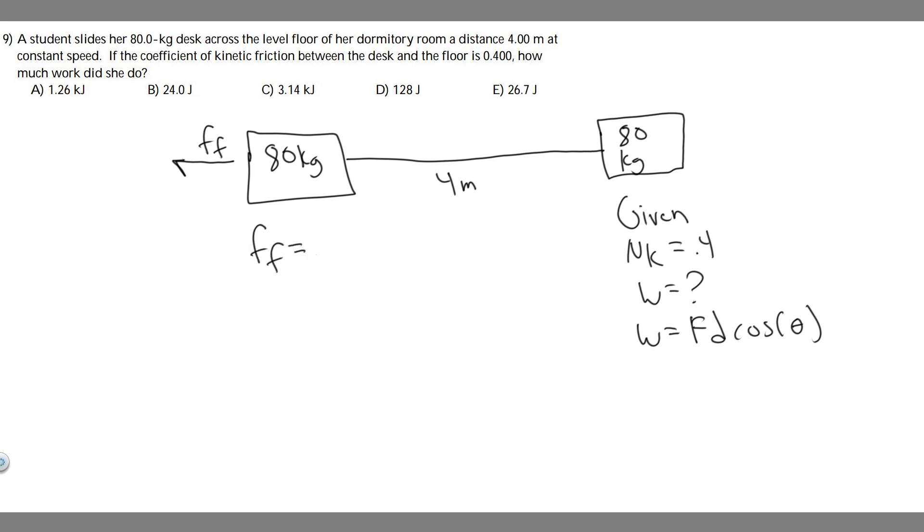The formula for the force of friction is mu sub k, or the coefficient of kinetic friction, times the normal force. They give us the coefficient of kinetic friction, 0.4, so we just need to find the normal force now.